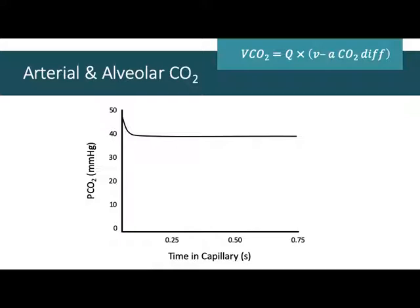Arterial CO2 and end-tidal CO2 should match if we have full, complete equilibration — which we do. I'm showing you a trace of PCO2 in venous blood; notice it starts higher and then almost immediately reaches full equilibration as it matches the air in the alveoli. You don't even need the full three-quarters of a second transit time at rest — only a fraction of that for full PCO2 movement. Arterial CO2 and alveolar CO2 should be the same, and if we can measure that at the mouth, we have a good idea of arterial CO2.